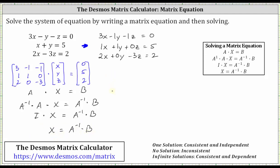Remember, matrix X is really the three by one matrix where the elements are x, y, and z. And this is equal to A inverse times B. So now going to the Desmos matrix calculator.